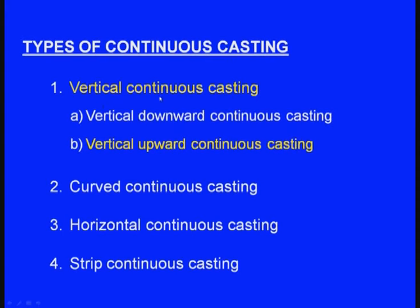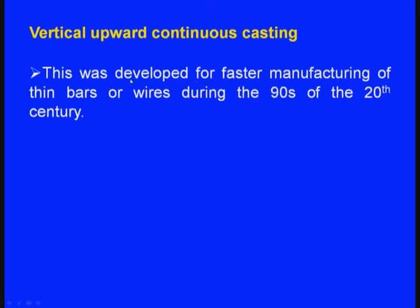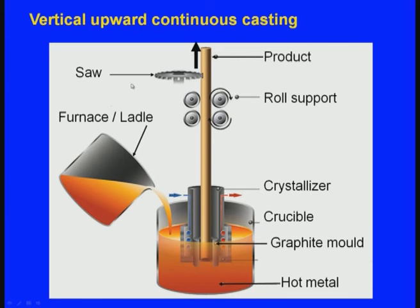The second type under vertical continuous casting is the vertical upward continuous casting. In the case of the vertical downward continuous casting, the solidified bar is coming downwards, but in the case of the vertical upward continuous casting, the solidified bar goes upwards in the opposite direction. This was developed for faster manufacturing of thin bars or wires during the nineties of the twentieth century.